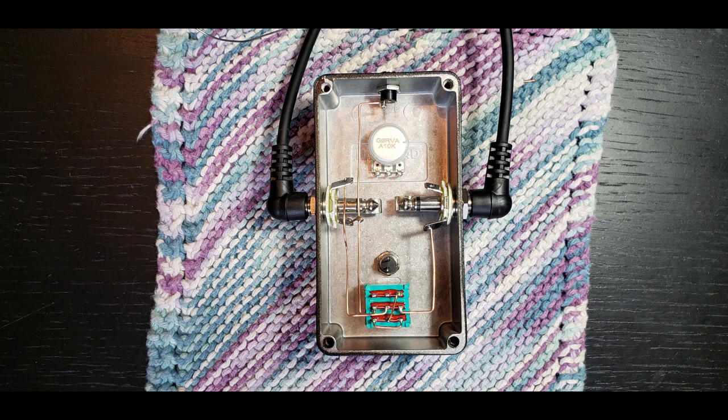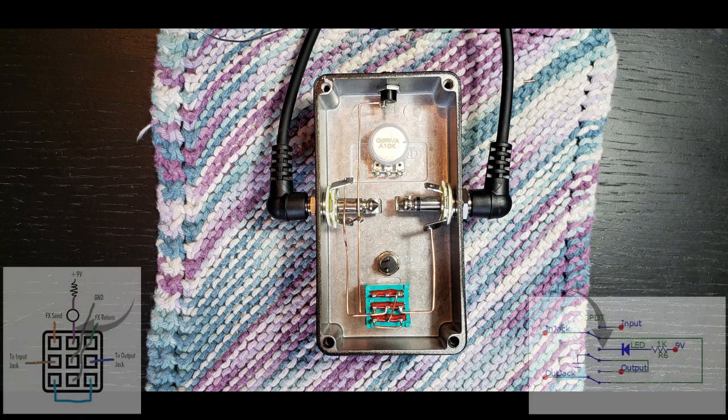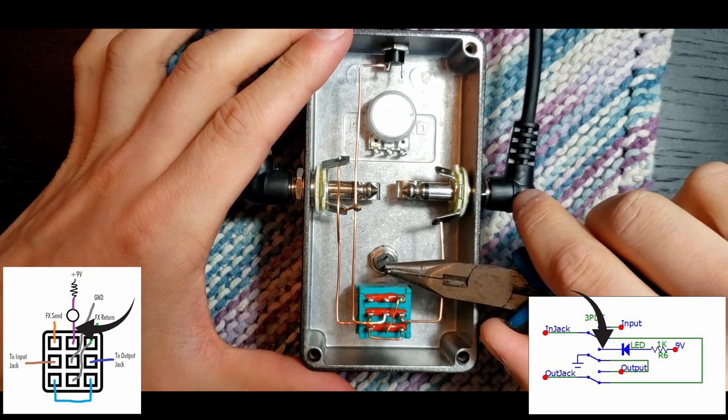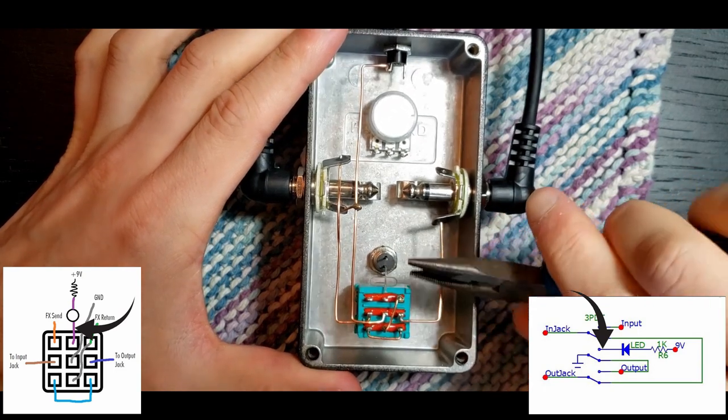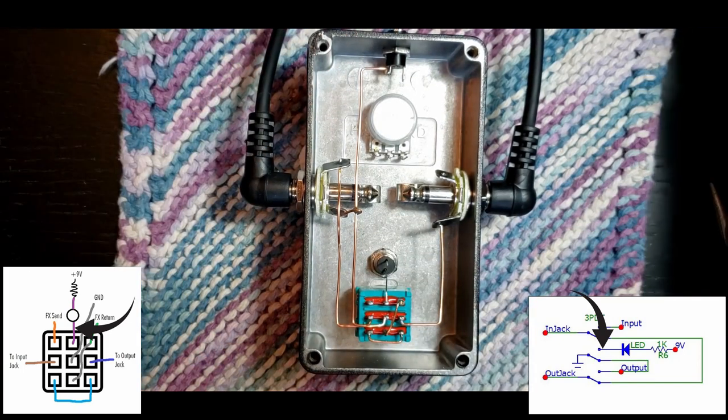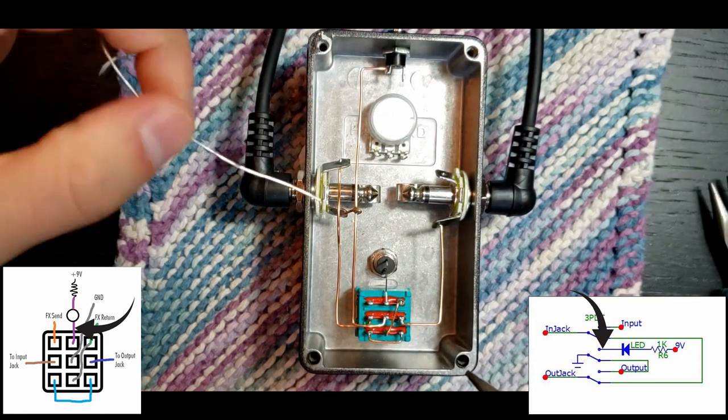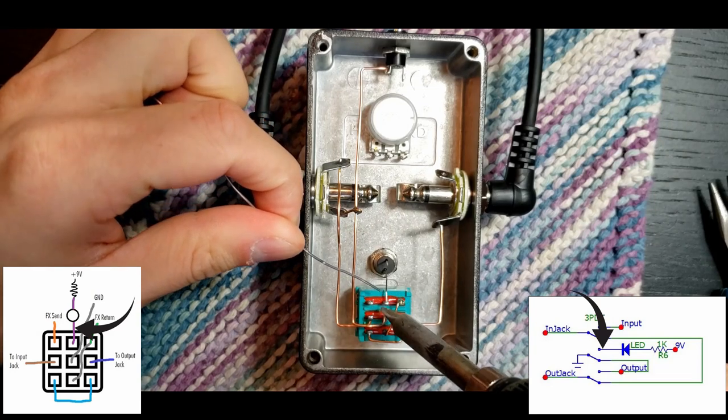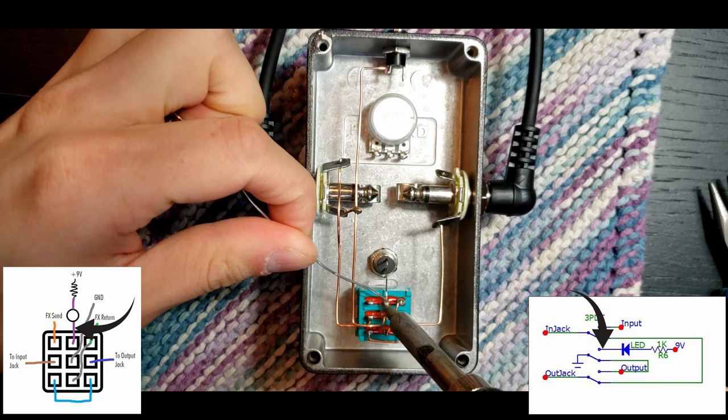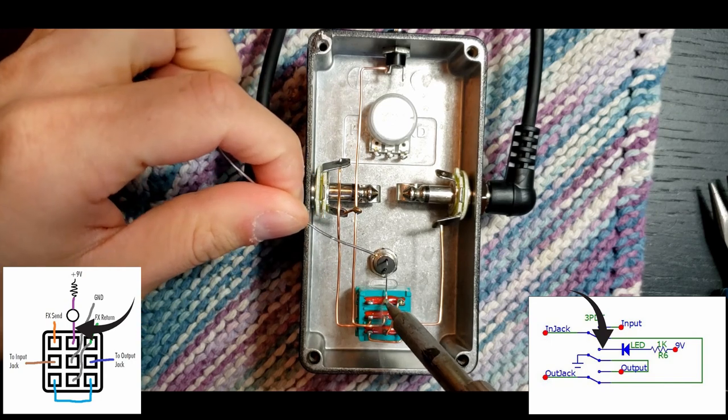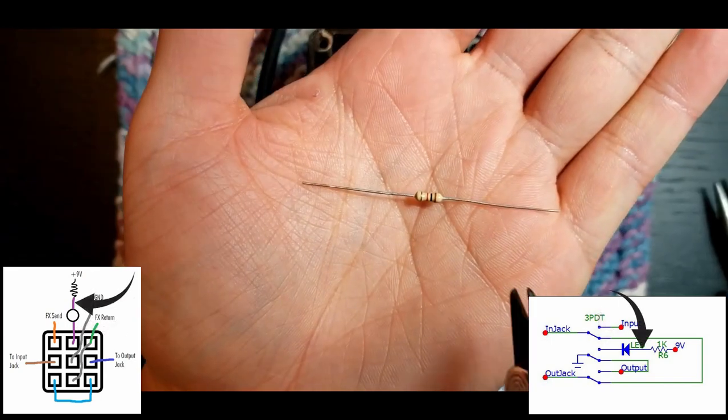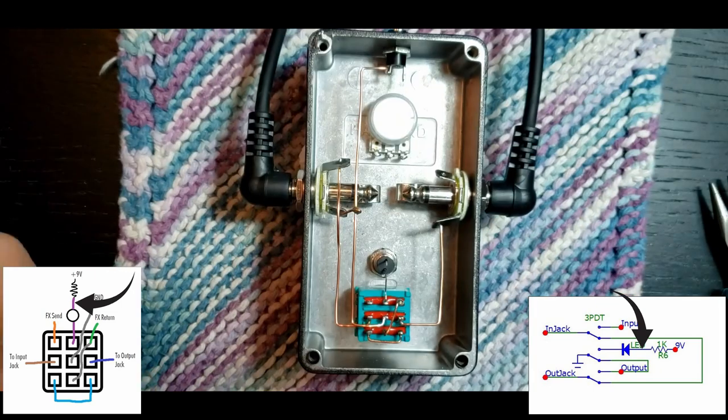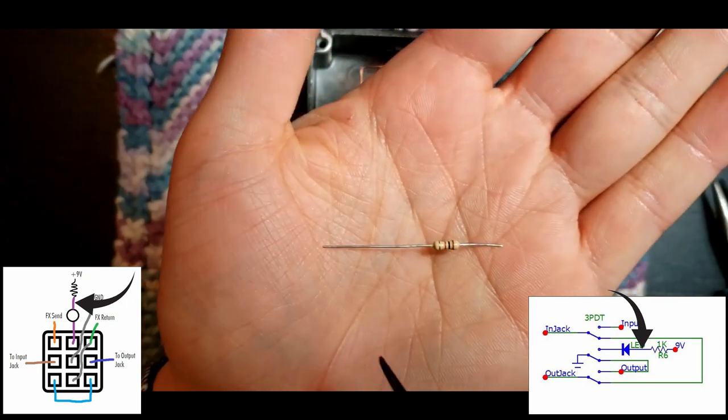Now we're going to bend the cathode, that's the short terminal of the LED, downwards, so that it connects with the nearest terminal on the foot switch. Solder it into place. This is R6, a 1k resistor, and just trim the leads about halfway. It doesn't have to be perfect. I'm going to trim them more later.